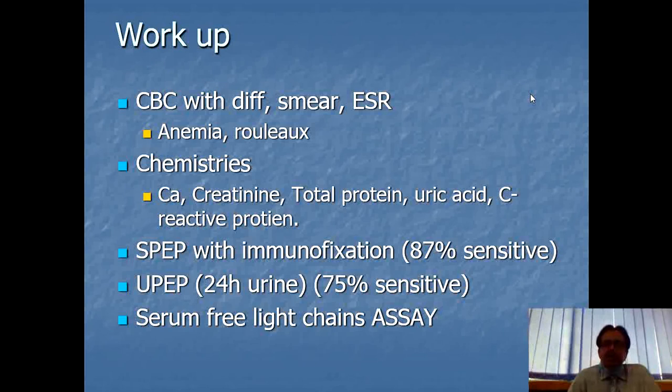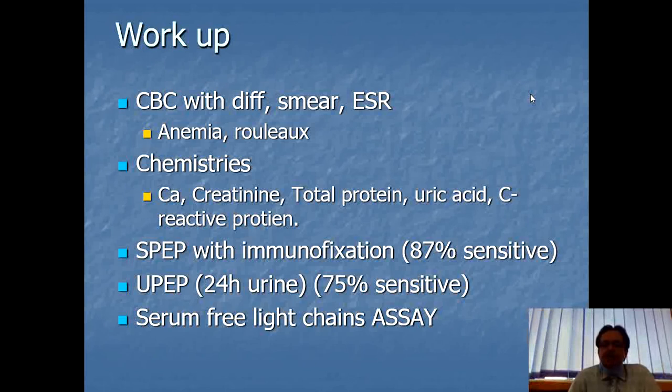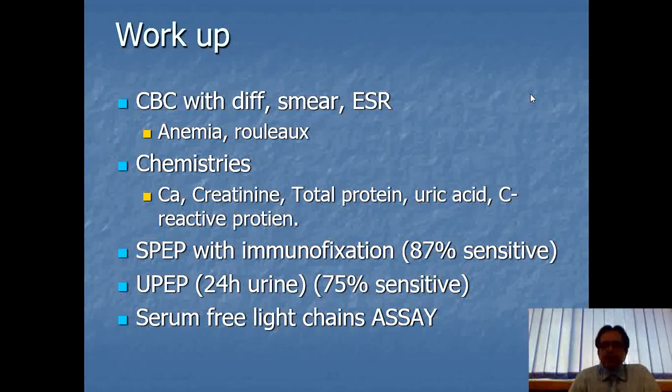Total proteins may be increased, uric acid may be high because of increased cell turnover, and CRP or C-reactive protein will also be high. The crucial diagnostic tests are SPEP — serum protein electrophoresis with immunofixation — and UPEP, which is 24-hour urine protein electrophoresis. The sensitivity of UPEP is about 70%.